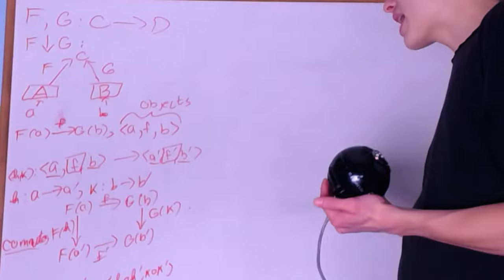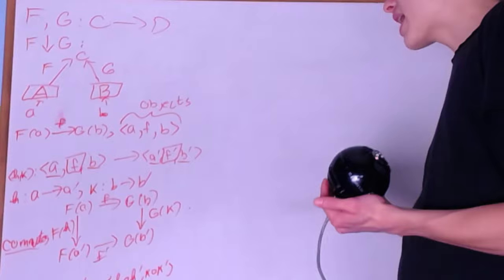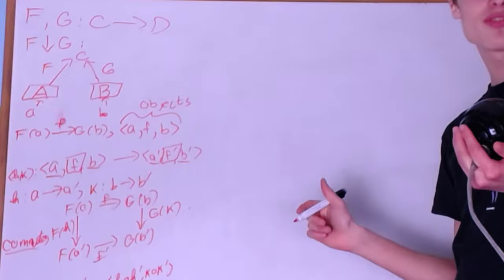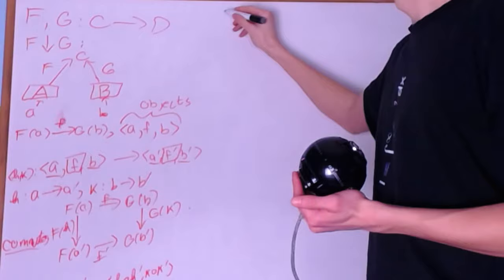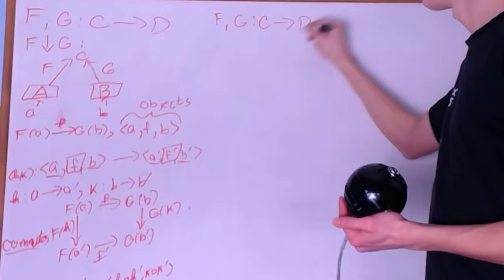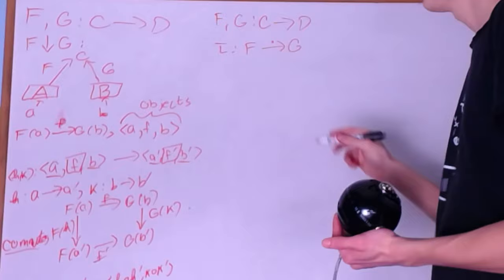When I said 'analyzing the outputs of two functors,' that should remind you of natural transformations, because that's how I described them before. At the beginning of this video I said comma categories generalize natural transformations in a way. So let's start with functors on the same category — same domain and codomain — and see how a natural transformation fits in.